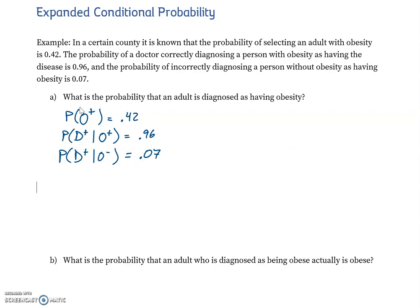So that's all the information we're given, converted into probability statements. Now let's find the probability that an adult is diagnosed as having obesity, P(D+). There are two ways you can receive a positive diagnosis: you're diagnosed as obese and actually are obese, or you're diagnosed as obese but are not actually obese. We can't just add them evenly — 42% of the population is obese.